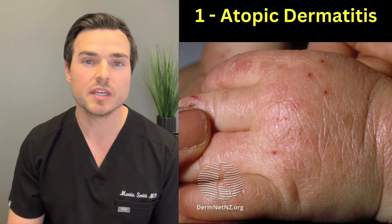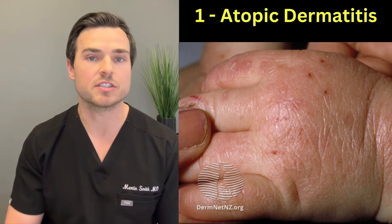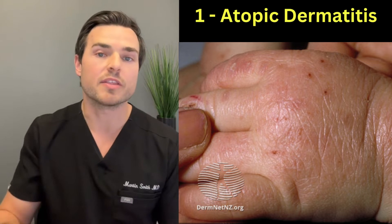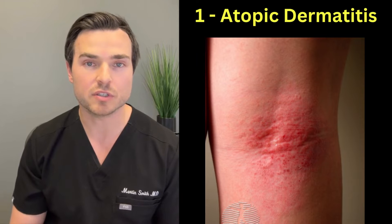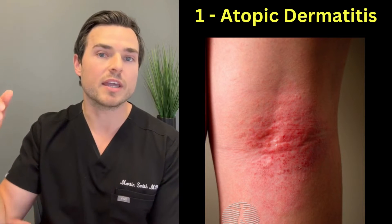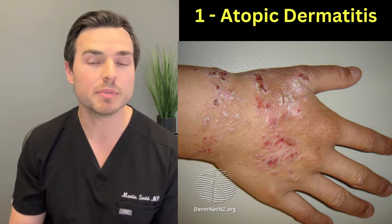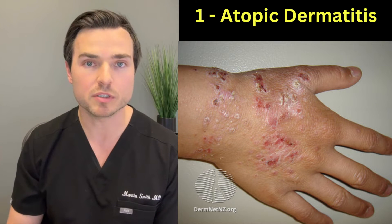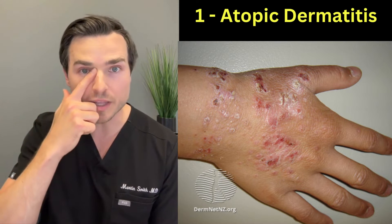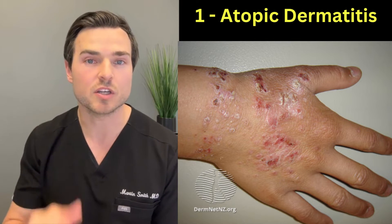Where does it show up? In different places at different ages. For toddlers and infants it usually appears on the extensor surfaces such as the back of the elbows and the front of the knees. For older kids and adolescents it's usually the flexural areas such as the inside of the elbows and the backs of the knees. In older adults it's usually specific areas — common places include the back of the hands, the eyelids and under the eyes, and also the corners of the mouth.